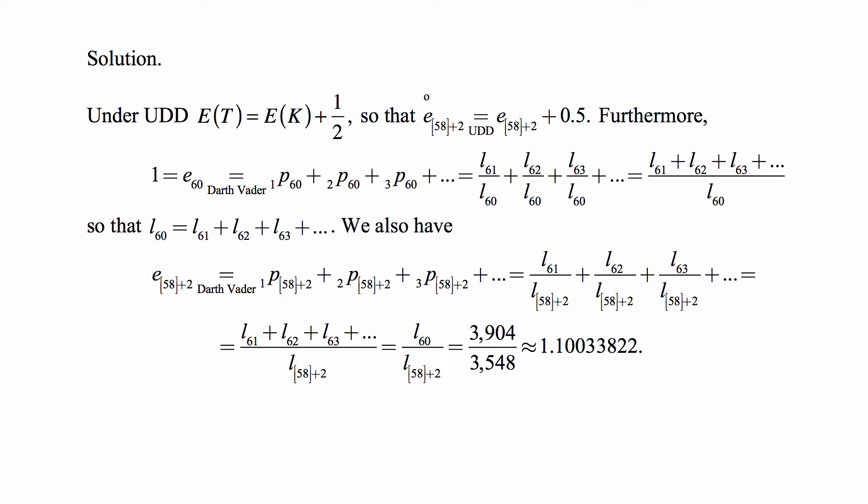Well then we'll use this information. Because E₍₅₈₎₊₂ under the same Darth Vader rule version is equal to L₆₁/L₍₅₈₎₊₂ + L₆₂/L₍₅₈₎₊₂ + L₆₃/L₍₅₈₎₊₂ and so on.